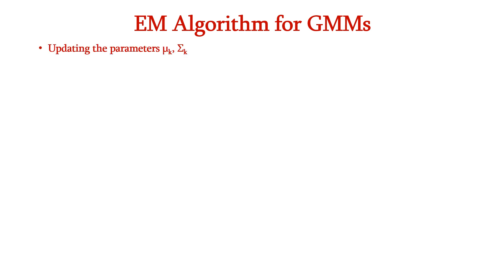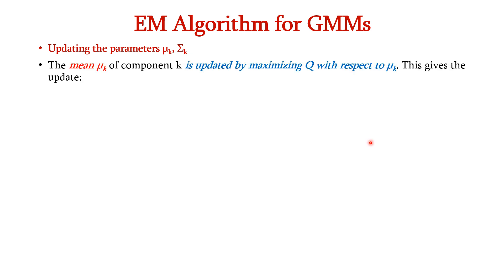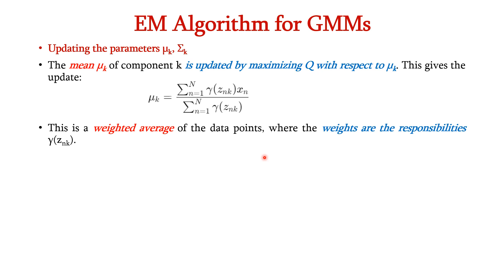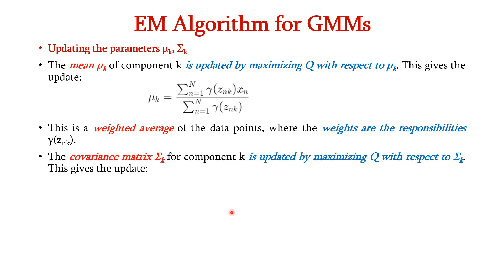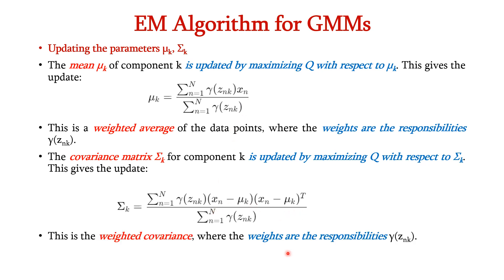Next, let us update the parameters μk and σk. The mean μk of component k is updated by maximizing Q with respect to μk, giving μk = summation from n=1 to N of γ(znk) · xn divided by summation from n=1 to N of γ(znk). This is the weighted average of the data points where the weights are the responsibilities γ(znk). Similarly, we update the covariance matrix σk as the weighted covariance: replacing xn with (xn − μk)(xn − μk)^T, weighted by the responsibilities γ(znk). Thus we have updated all parameters in the M step.